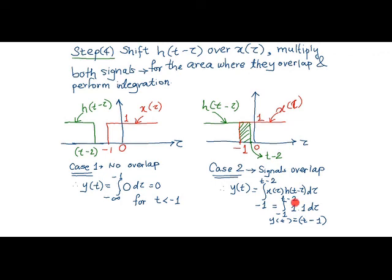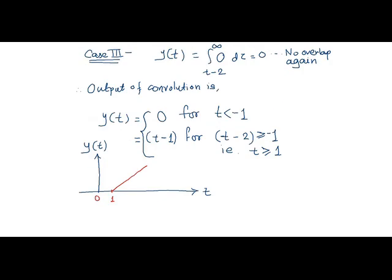In the third case, from t minus 2 to infinity, again there is no overlap between both the signals. Therefore, the output remains 0. Thus, the total output of convolution will be y of t as 0 for t less than minus 1 whereas y of t is t minus 1 for t minus 2 greater than or equal to minus 1. After simplification, that leads to t greater than or equal to plus 1.